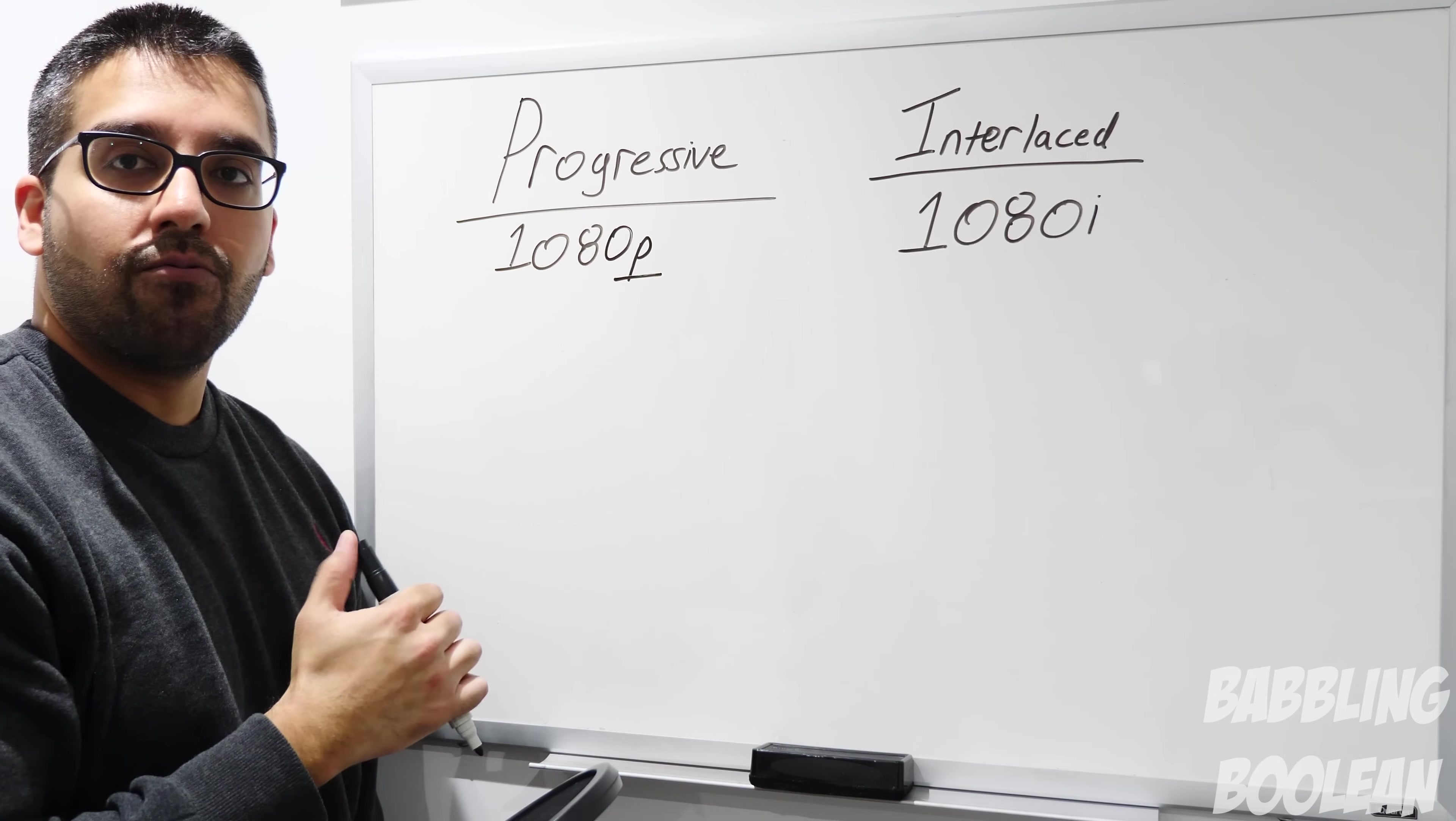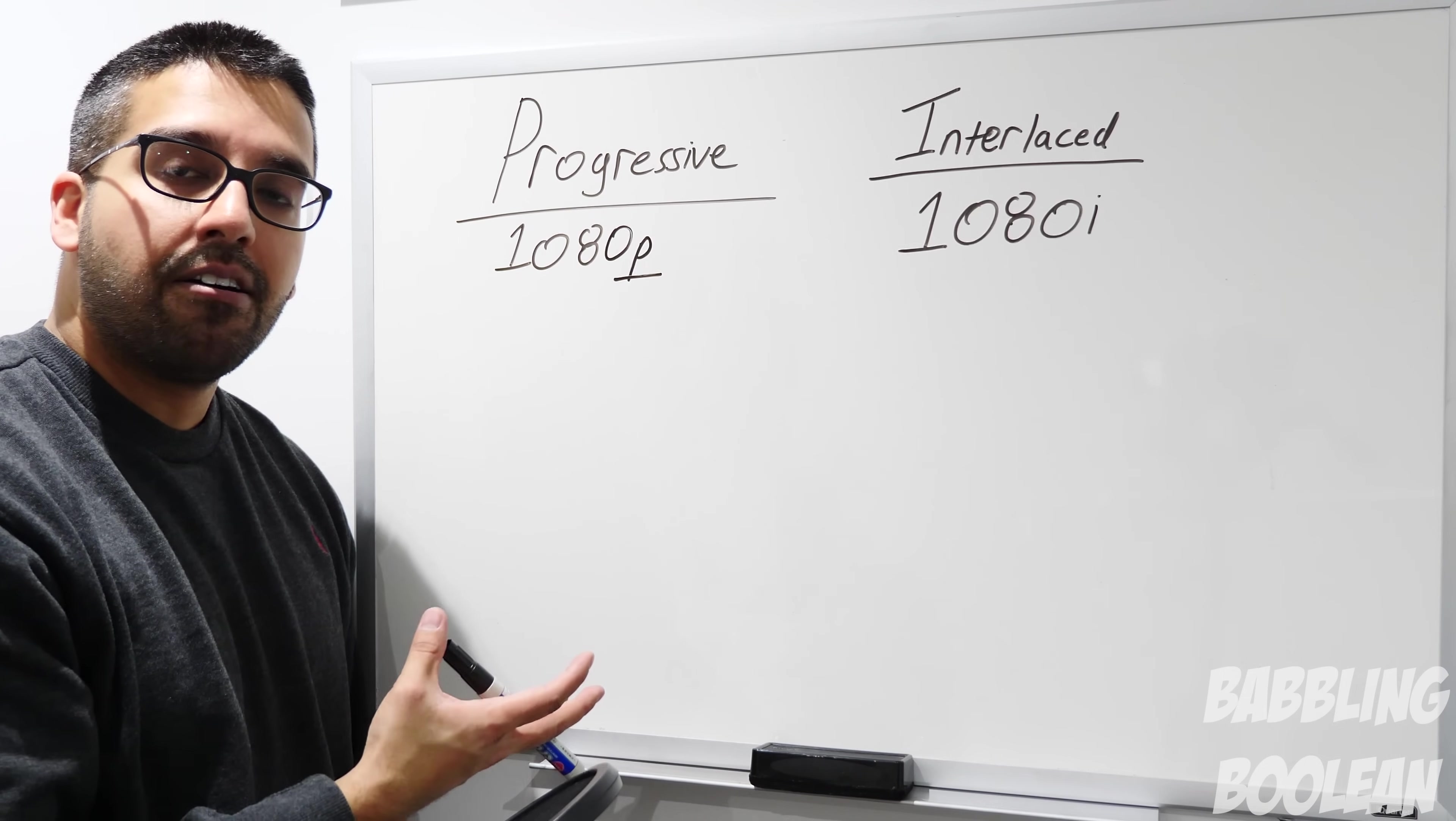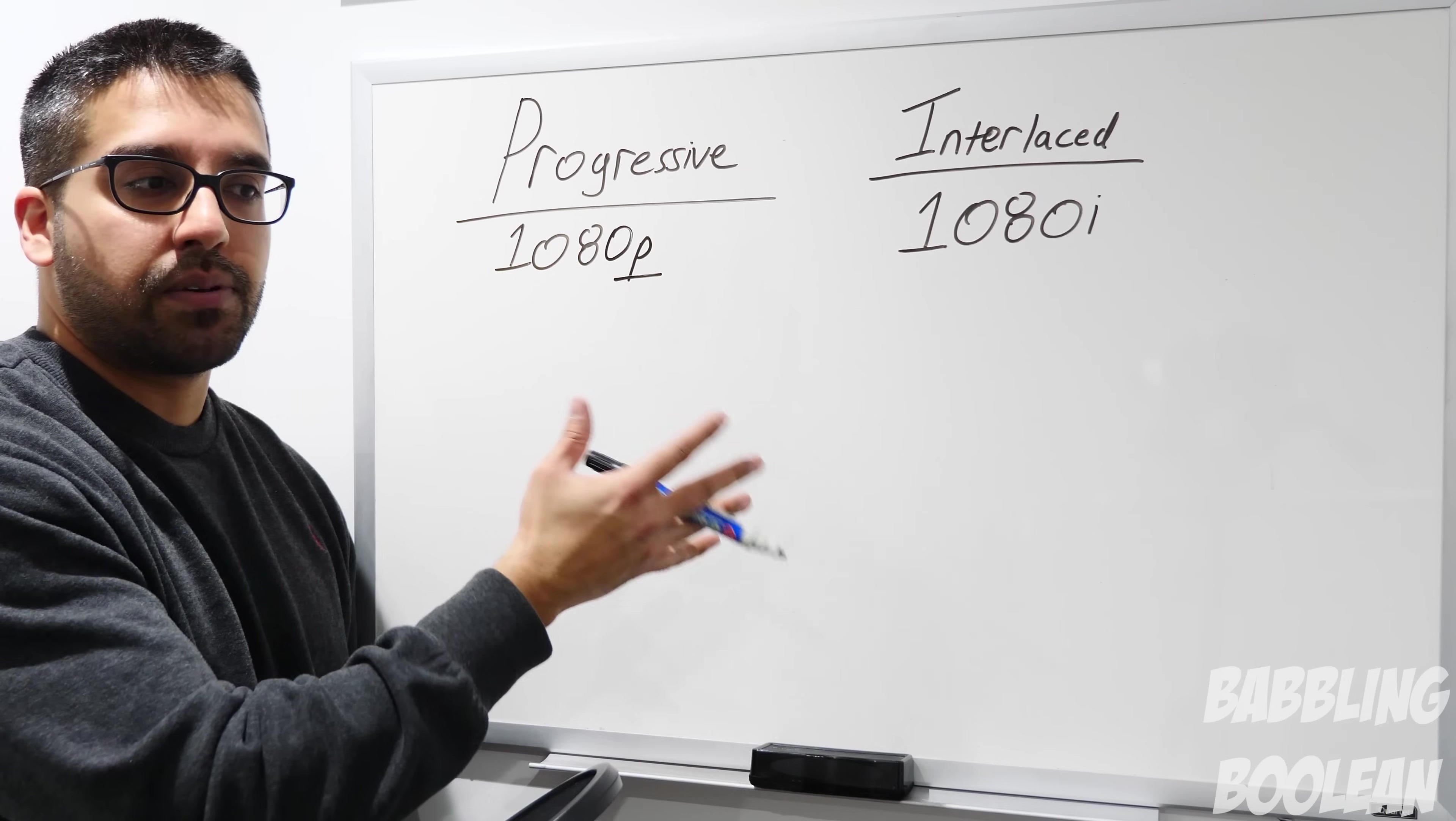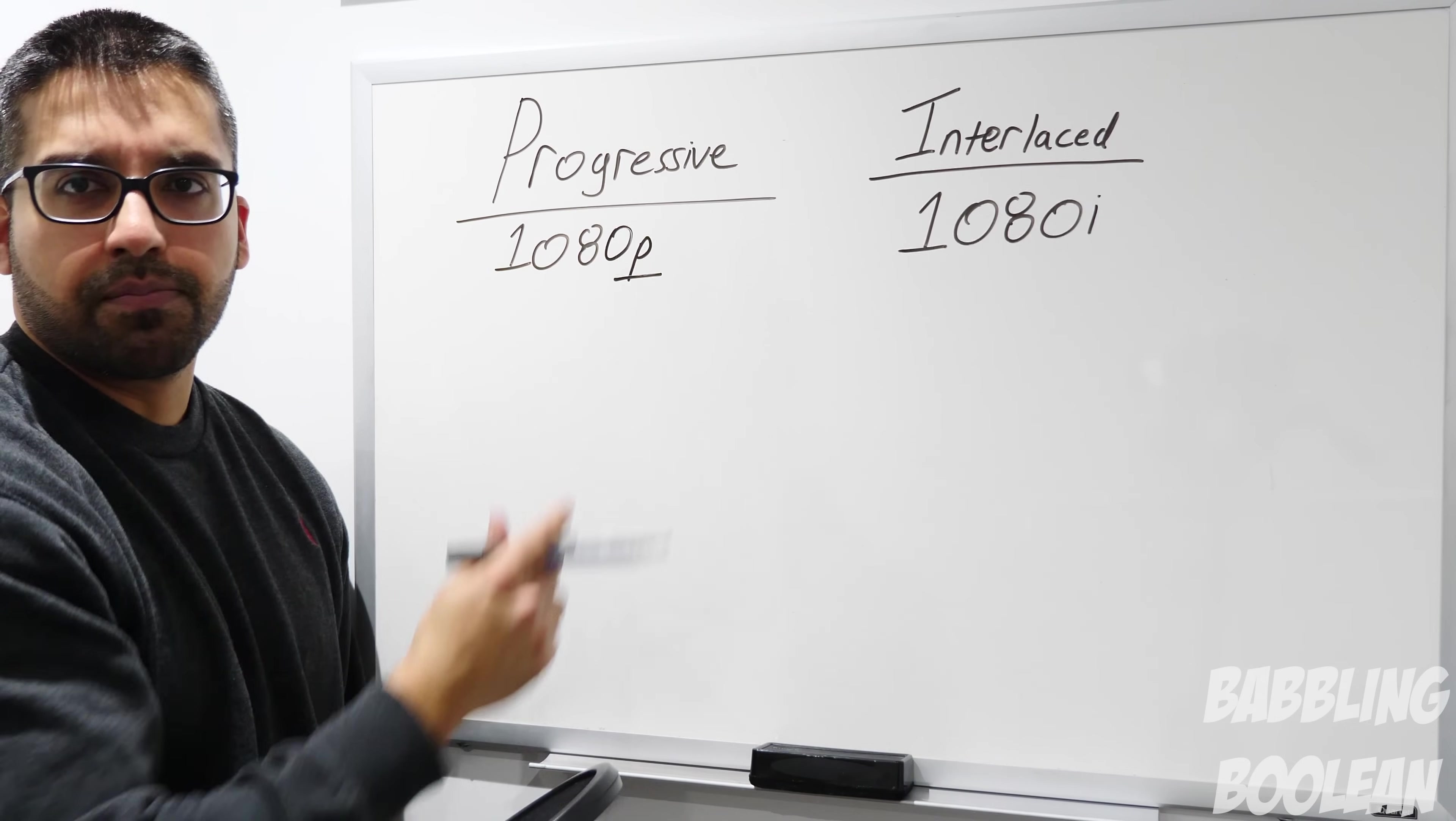Understanding what the numbers 720, 1080, 4K, 8K, 16K mean I'll be explaining in a different video. You can find a link to that video in the description. Some concepts in that video overlap with this one, so it's best to watch them together. For the sake of this video, we're going to use the number 1080 for progressive and 1080 for interlaced.